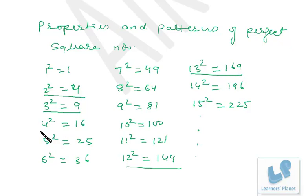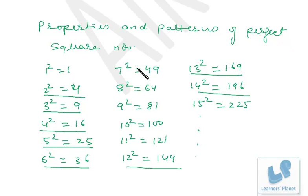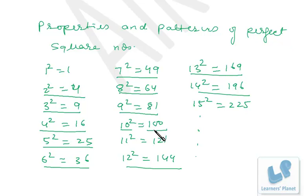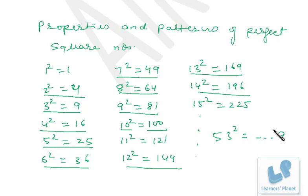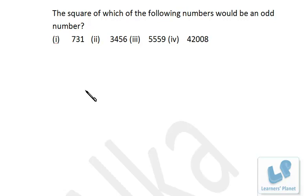Continuing: numbers ending in 5 → square ends in 5; ending in 6 → square ends in 6; ending in 7 → square ends in 9; ending in 8 → square ends in 4; ending in 9 → square ends in 1; ending in 0 → square ends in 0. So to find the unit digit of any square, just square the unit digit of the number. For example, 53² — unit digit is 3, 3²=9, so 53² ends in 9.